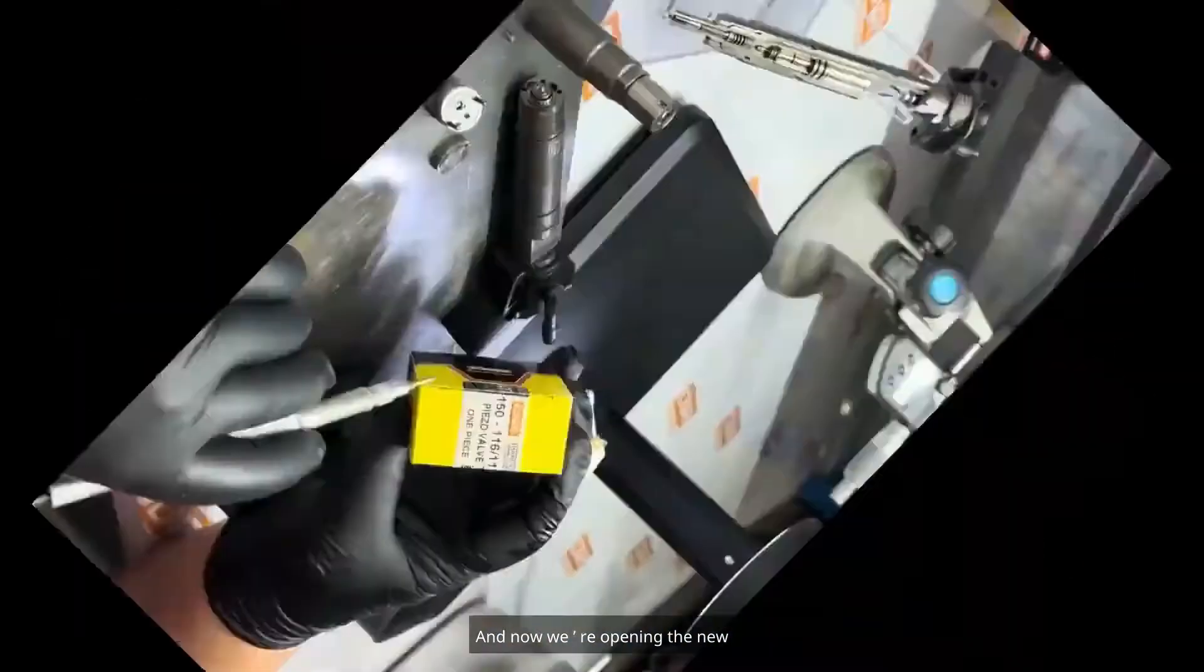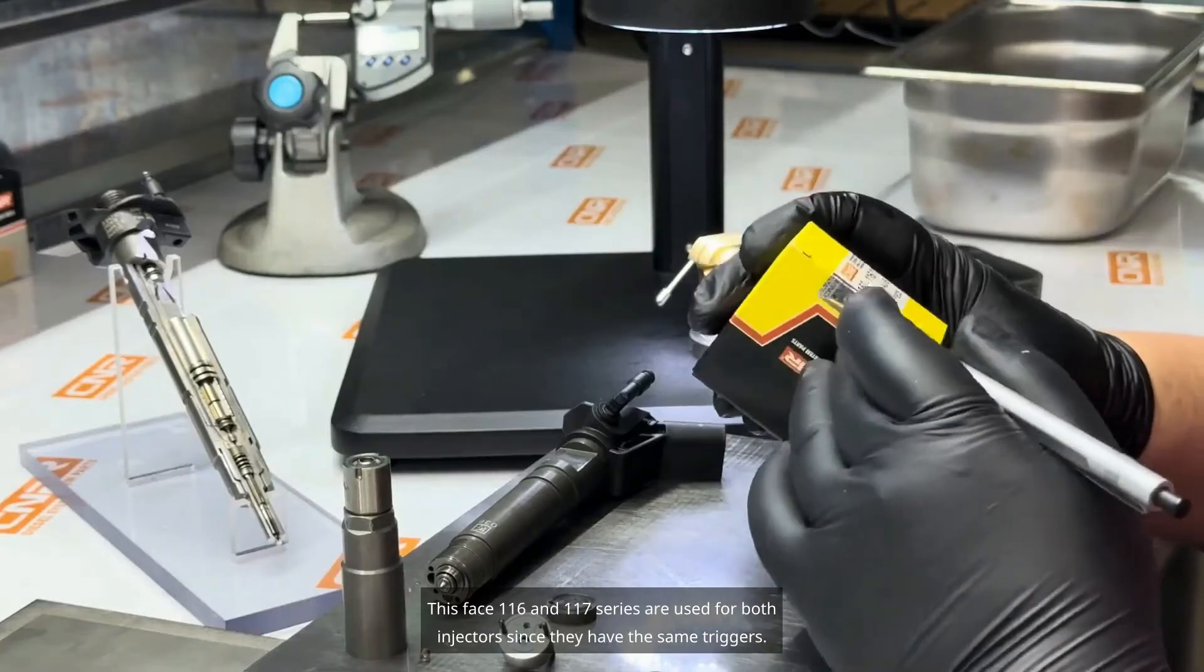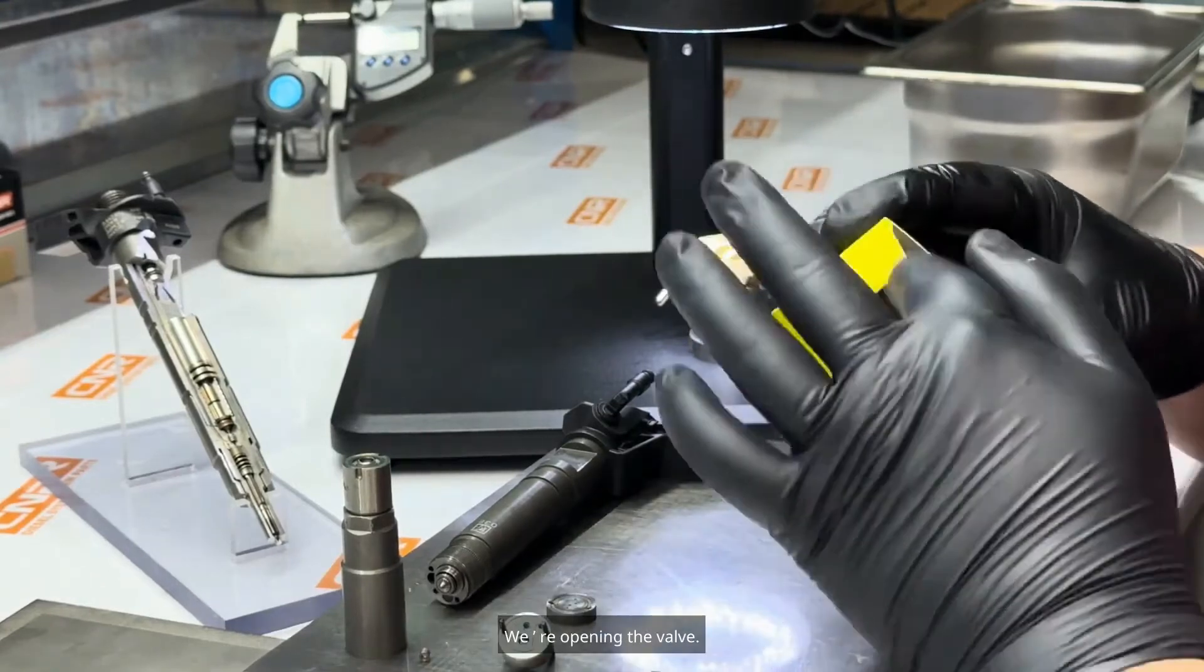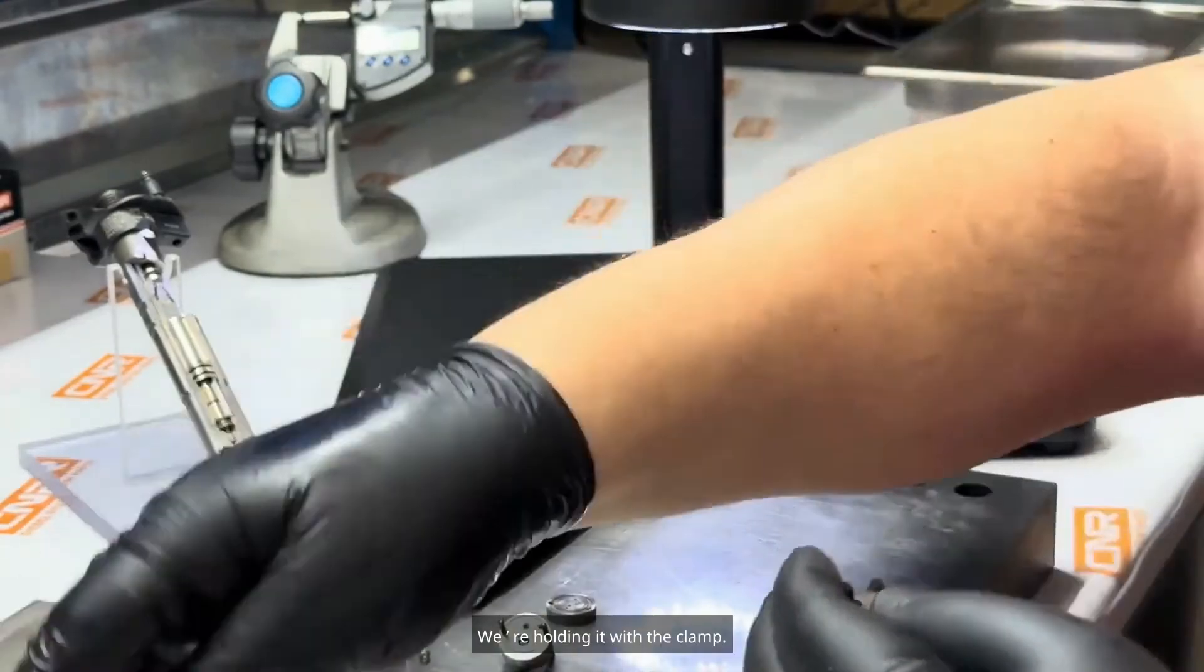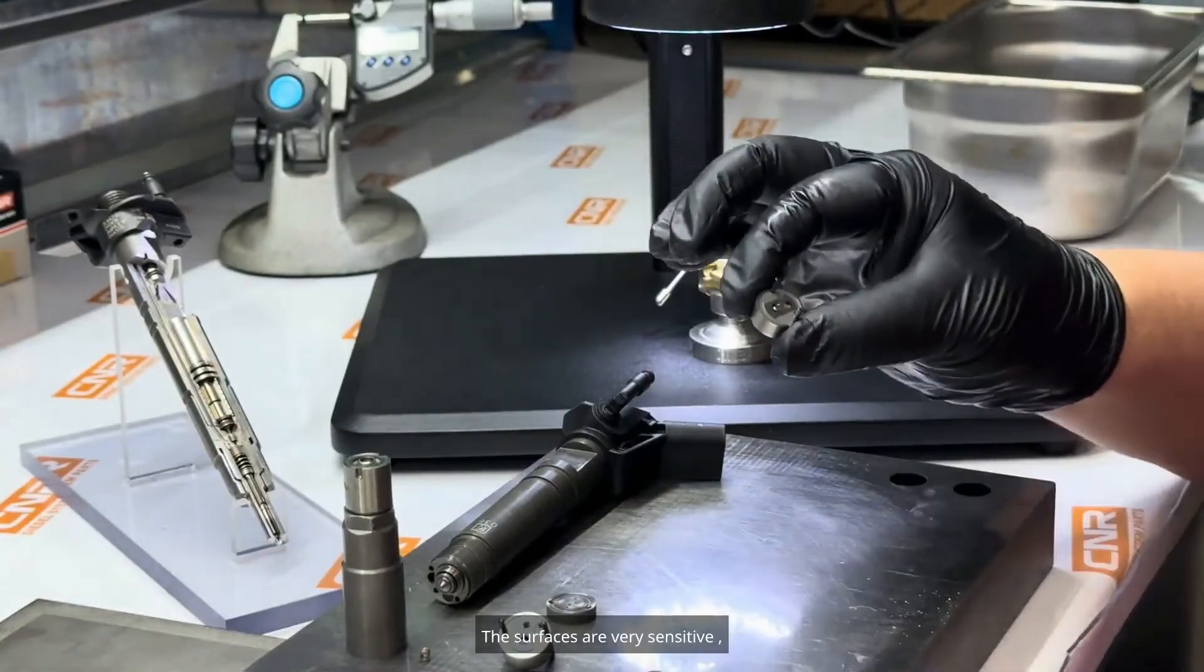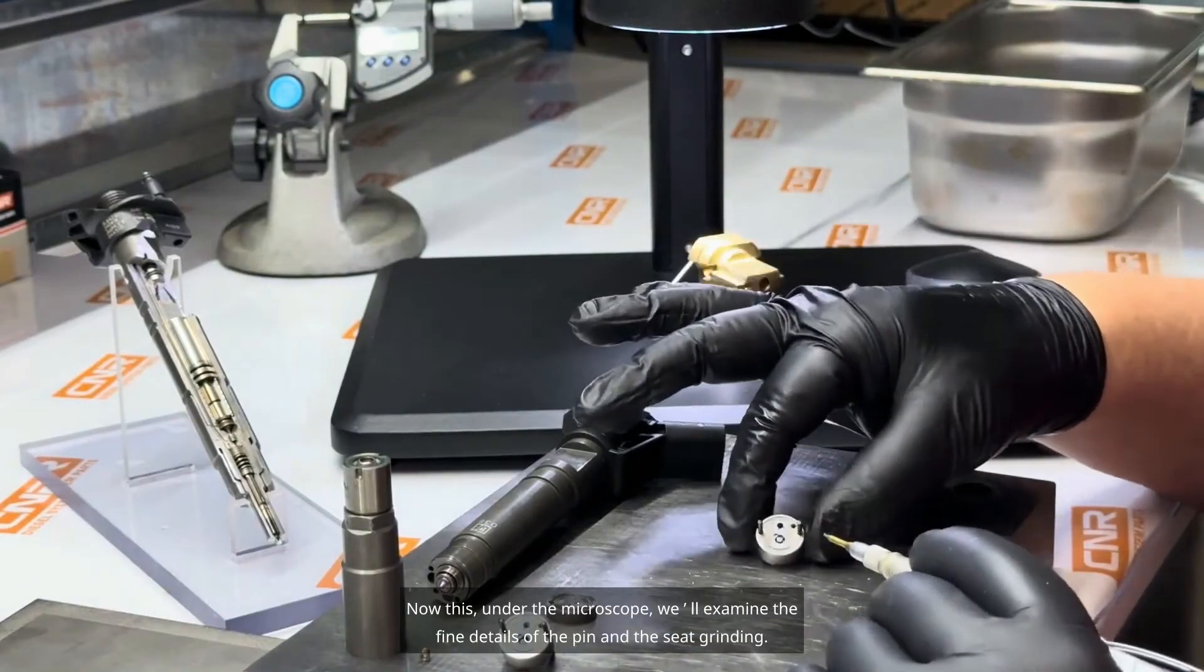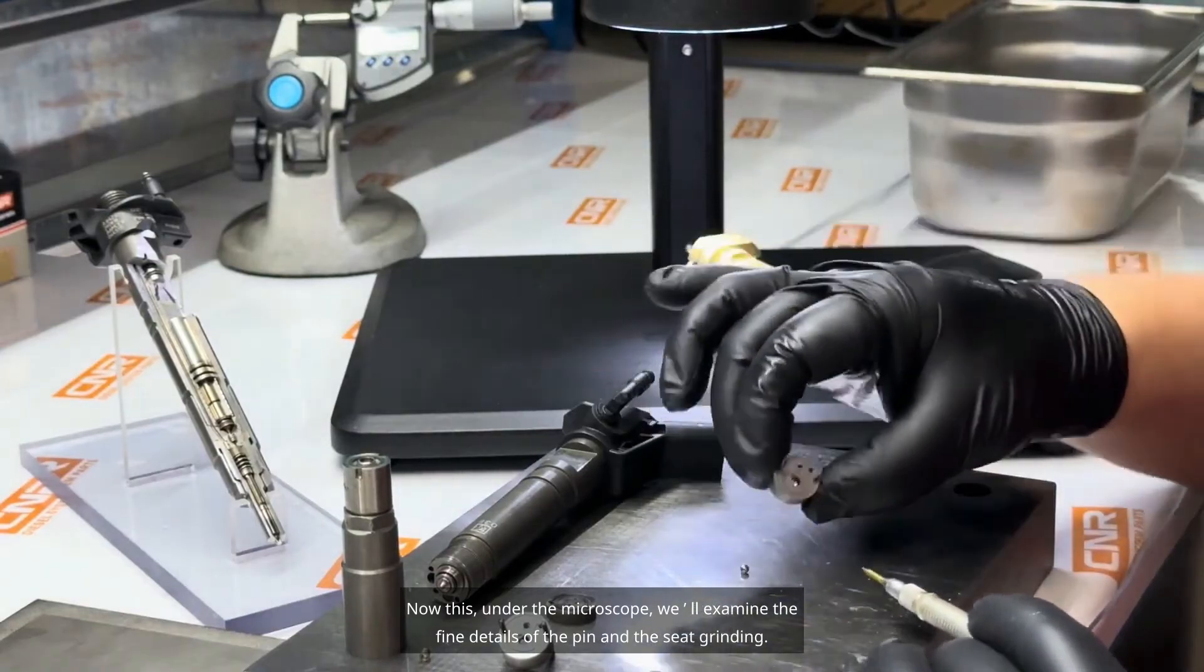And now we're opening the new piezo valve. This face, 116 and 117 series are used for both injectors since they have the same triggers. We're opening the valve. We're holding it with the clamp. The surfaces are very sensitive.